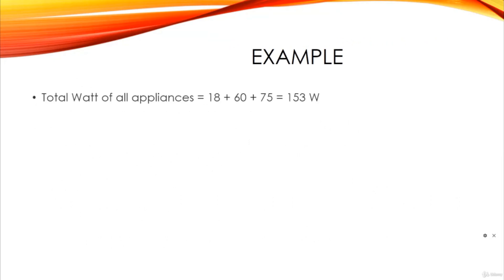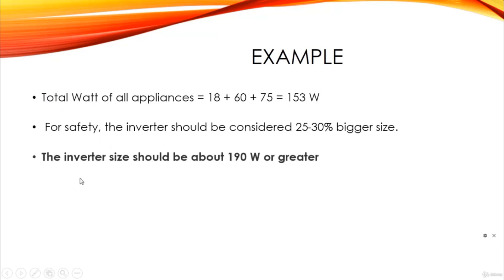Now let's work through an example. From our previous example, the total watt of all appliances is: 18W (fluorescent lamp) + 60W (fan) + 75W (refrigerator) = 153 watts. The inverter capacity must be greater than the total wattage of the appliances by 25 to 30 percent for safety. Multiplying 153W by 1.25 or 1.30 gives us approximately 190 watts. So the inverter size should be 190 watts or greater.